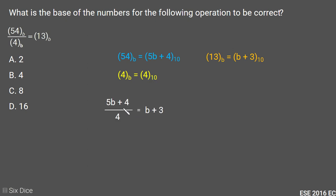Now we will perform our given task. We divide: 5b plus 4 divided by 4 equals b plus 3. So we multiply this 4 here, giving us 5b plus 4 equals 4b plus 12. After simplification, we get the answer: b equals 8. So option C is the right one.